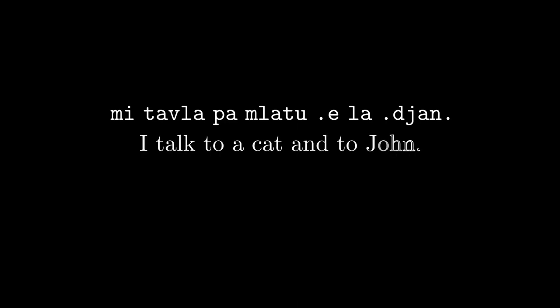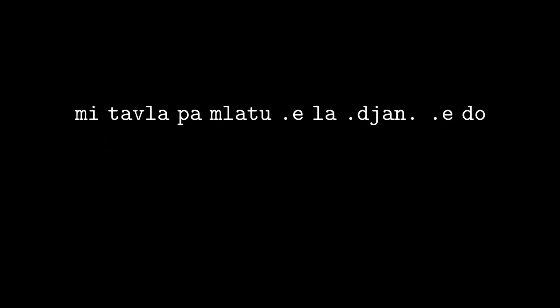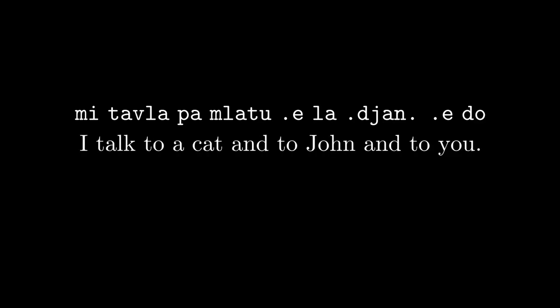There are four major connectives marked by vowels: a, e, o, and u. They mean inclusive or, and, if and only if, and whether or not. I think the simplest form of connectives are for sumti. Suppose I want to say that I talk to a cat and to John simultaneously: 'mi tavla pa mlatu i mi tavla la .djan.' And now to include you: 'mi tavla pa mlatu e la .djan. e do'.